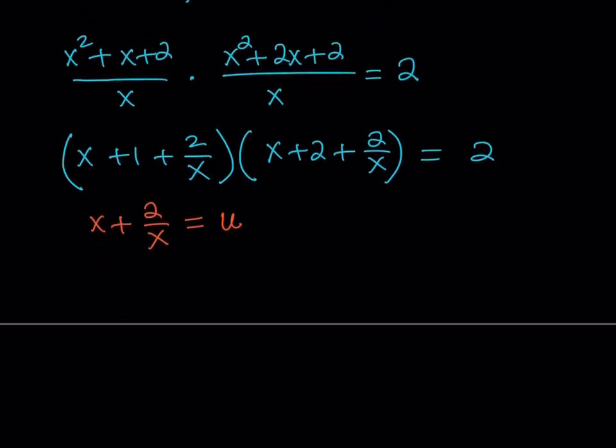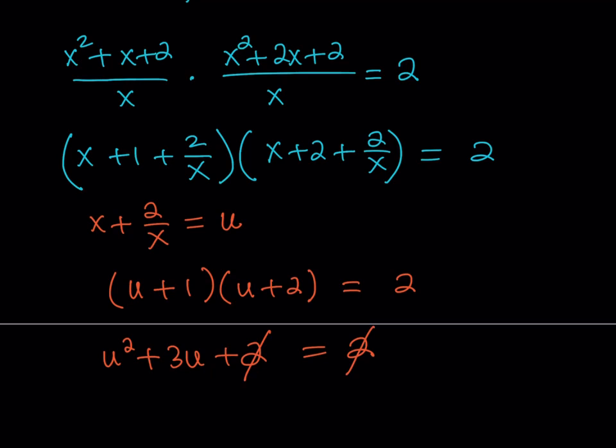So after calling x + 2/x u, then you should be getting (u + 1)(u + 2) = 2. Now at this point you might be thinking okay I can find the solutions. Let's just distribute and use the quadratic. u² + 3u + 2 = 2. That's amazing because even the constants cancel out. This is super simple.